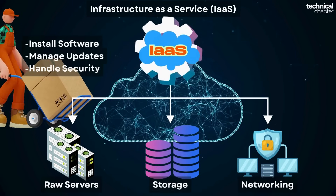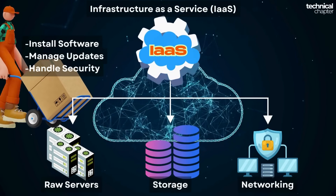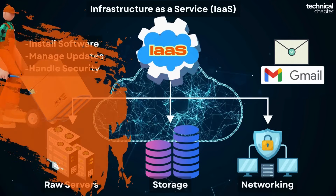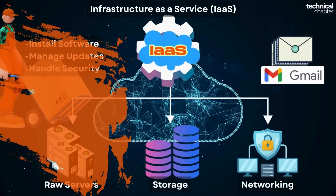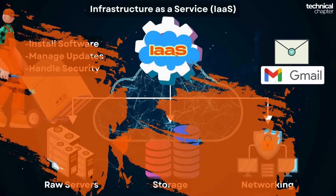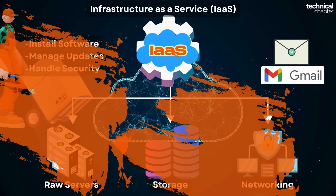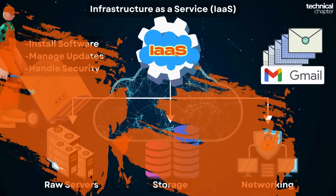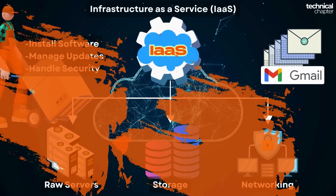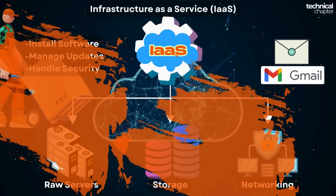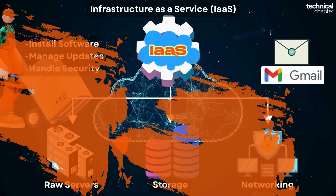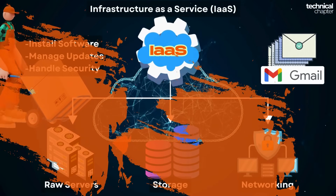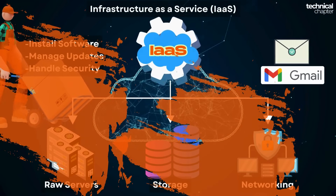Why is Gmail not IaaS? Well, IaaS is basically renting raw servers, storage, and networks — you get the foundation, but you still have to install software, manage updates, handle security, and make it all work yourself. With Gmail, you don't get servers, you don't install email software, you don't manage storage, security, or updates — Google does all that for you. You just log in and start sending emails. So Gmail is SaaS because you're using the finished product.